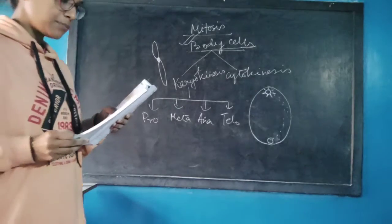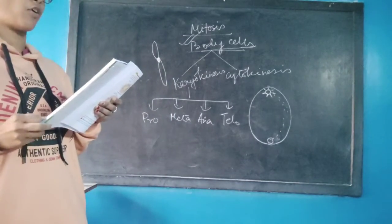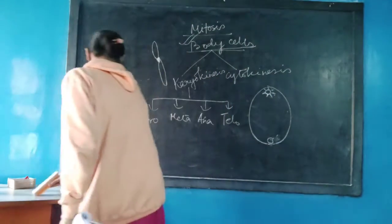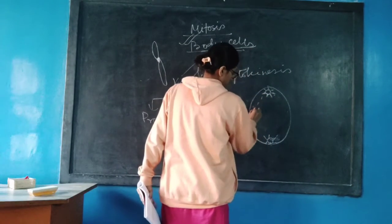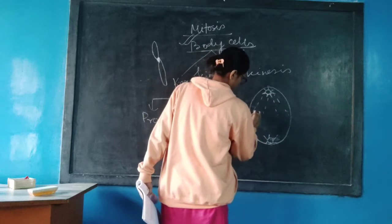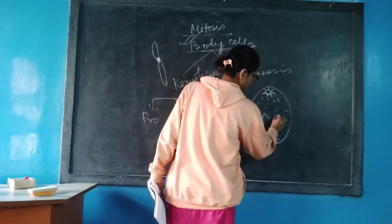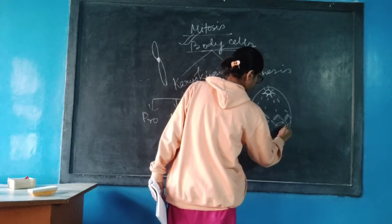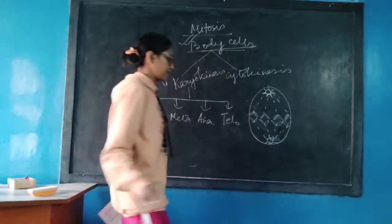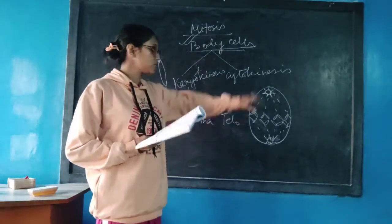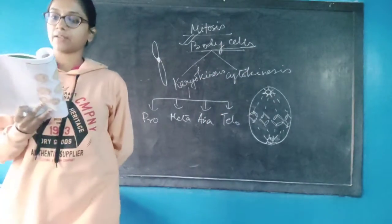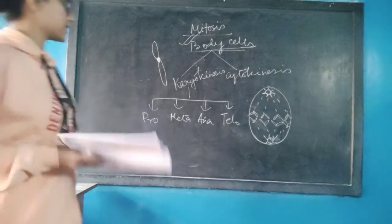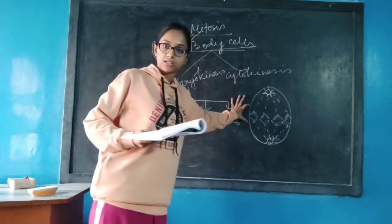Now coming to metaphase. A diamond-shaped structure is formed during metaphase, which we call the spindle. The chromosomes are arranged in the metaphase plane — the equatorial plane. Two pointed ends of the spindle are called poles and the center part is known as the equatorial region.